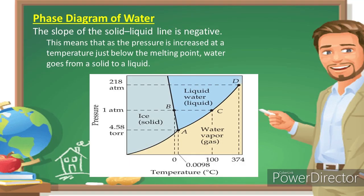In the phase diagram of water, the slope of the solid-liquid line is negative. This means that as pressure is increased at a temperature just below the melting point, water goes from a solid to a liquid. That is why the slope of the solid-liquid line is negative.